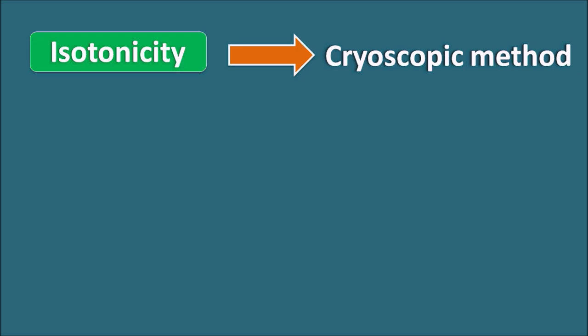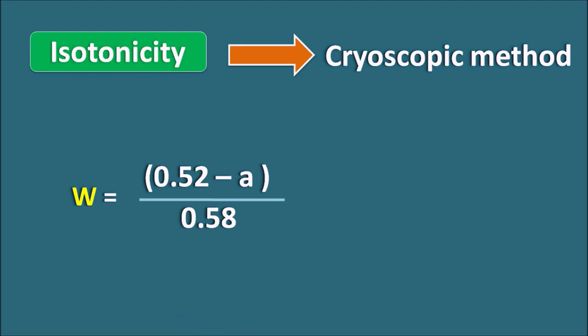We can write a simple formula: W = (0.52 − A) / 0.58. However, when we use this simple formula we will not get the correct value of sodium chloride required and may get the wrong value. This formula is not valid for all conditions. In this video we will see an example of how to calculate the amount of sodium chloride required by the cryoscopic method, as well as a correct simple formula.